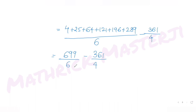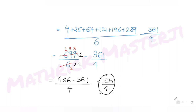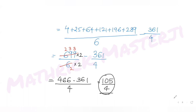Simplifying 699/6: dividing by 3 gives 233/2. To make the denominators the same, multiply 233/2 by 2/2 to get 466/4. So sigma square = 466/4 − 361/4 = 105/4. The variance is 105 over 4.